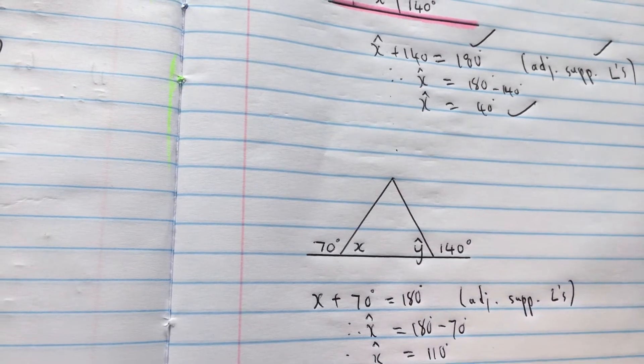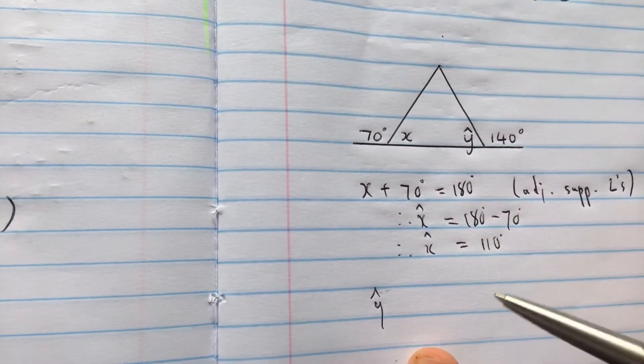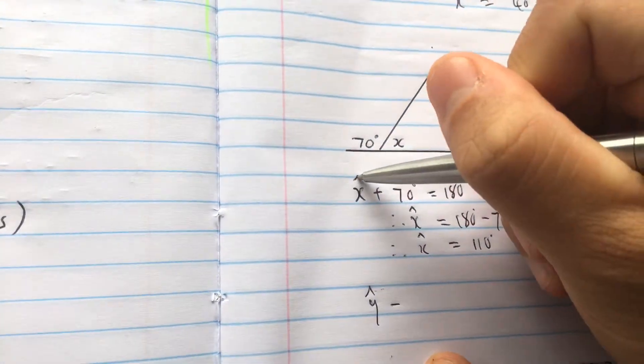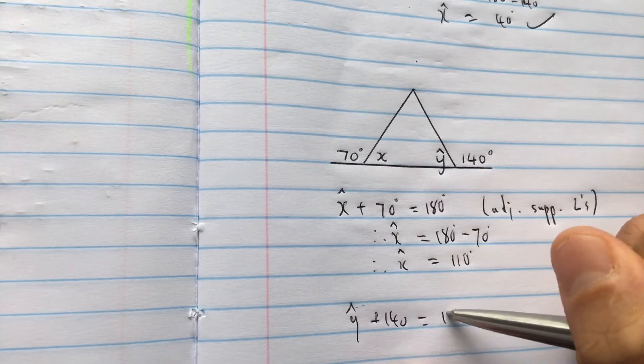Then to work out y, same thing. Angle y, that little copy means angle. Angle y, I should have put a copy there too. Plus 140 equals 180 degrees.